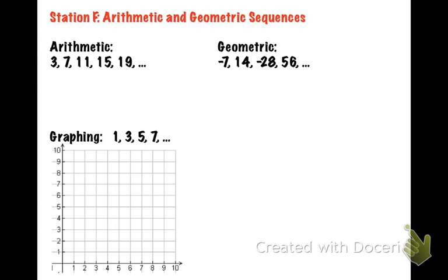If you're trying to explain why something is arithmetic or geometric, you need to be sure that you use those words. You can say it is arithmetic because it has a common difference of two, or you could say it is not geometric because it does not have a common ratio. But you need to make sure that you use that vocabulary in any of your explanations.